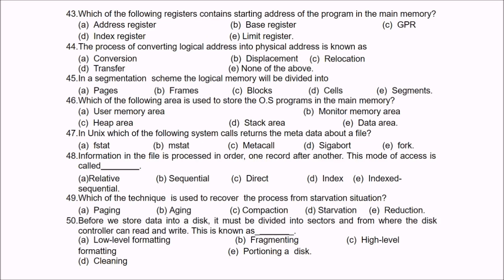Question 43: Which register contains the starting address of a program in main memory? The answer is the Base Register — since you cannot have 0000 as the starting address, a base register is used for that.